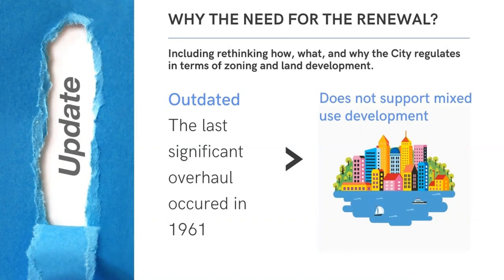The last significant overhaul actually hasn't occurred since 1961. So now, 60 years later, many development regulations that were designed for a small prairie city in the 1960s are still shaping the built form of Canada's fifth largest city in 2020. For those of you familiar with the City's zoning processes, you will know the Bylaw has been amended many, many times in the last several years. Taken together, these numerous amendments show that the Bylaw is not meeting market demand in the City.